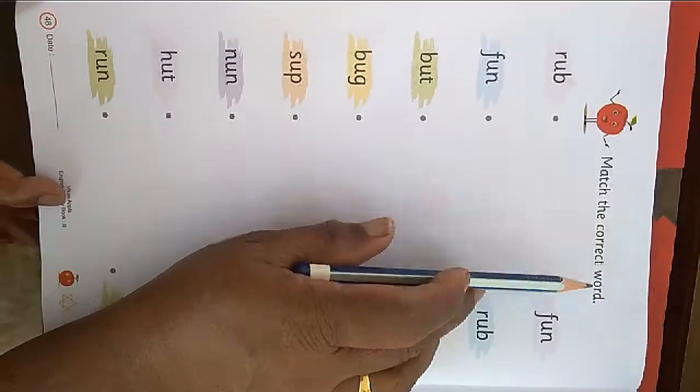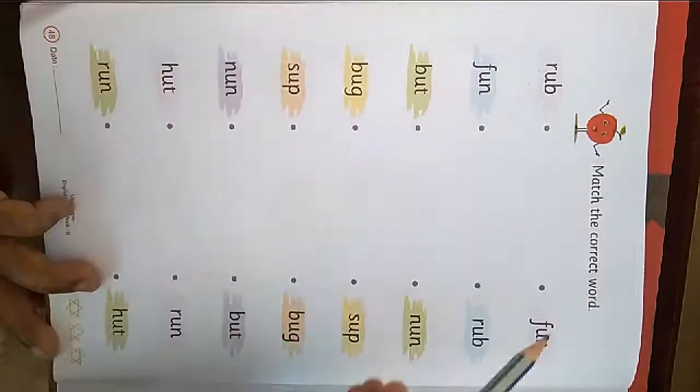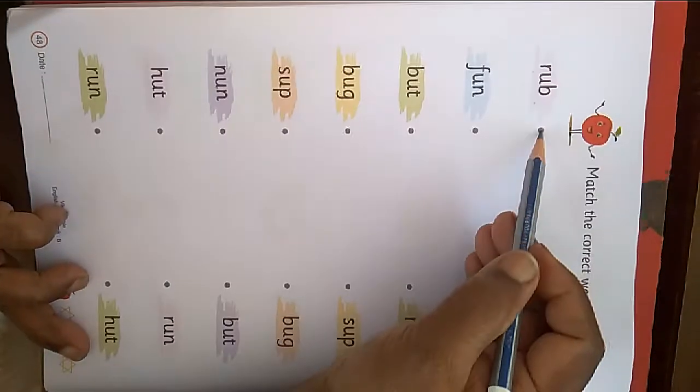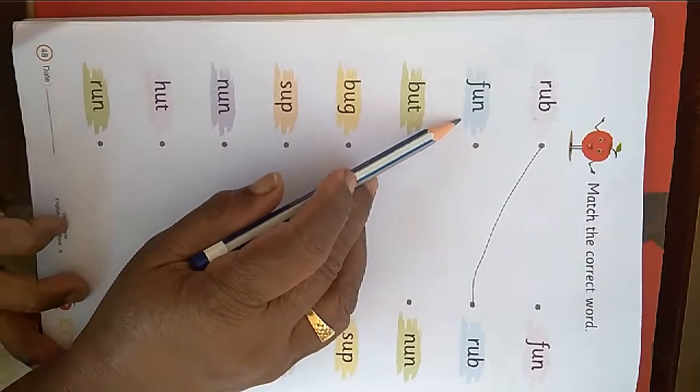Match the correct way. Same same way. Same same way. Go match karni ka. R U B rub. Kithere R U B rub? Yer. Next. F U N fun. Fun kithere?